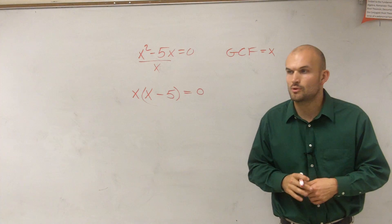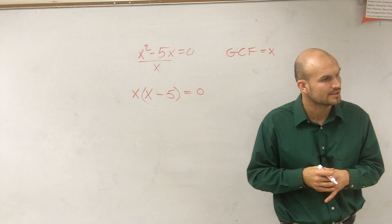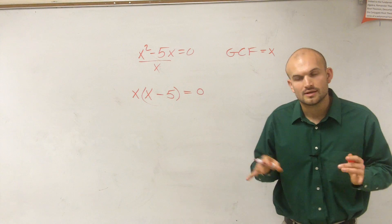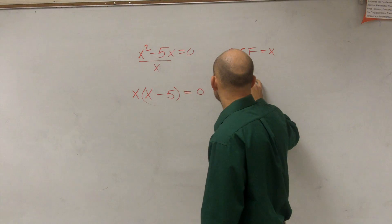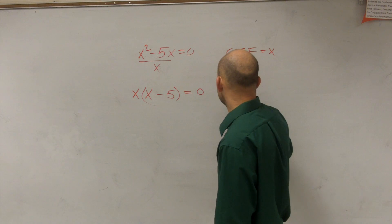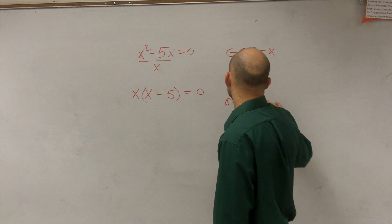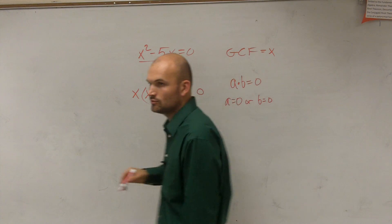So now what we're going to do is what we call applying the zero product property. And applying the zero product property, if you guys remember, stated that if you have two numbers that multiply to give you 0, that means one of them has to go and equal 0.